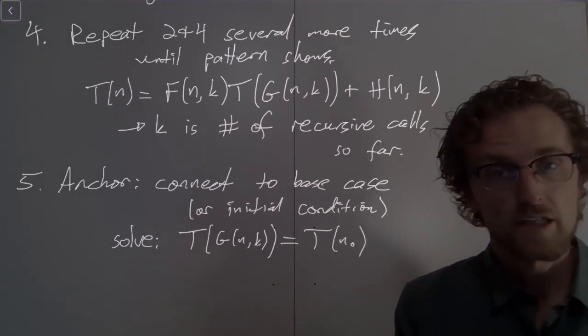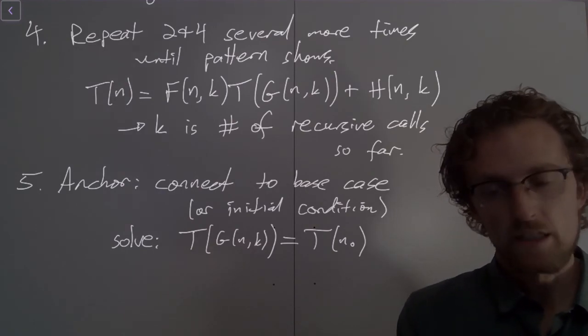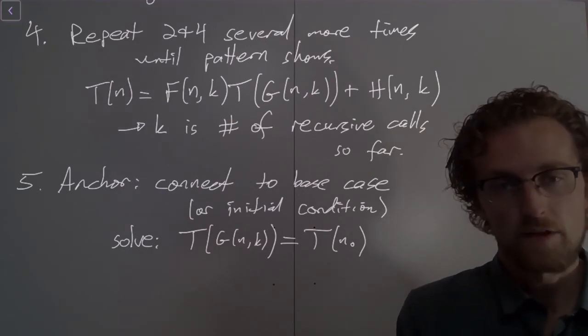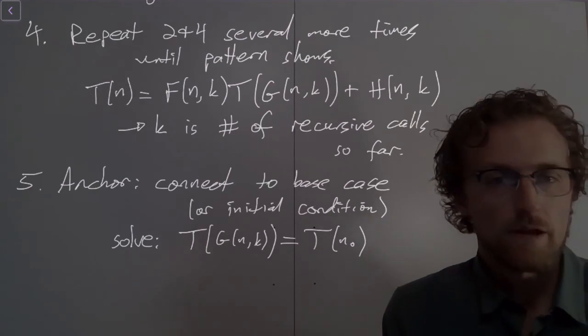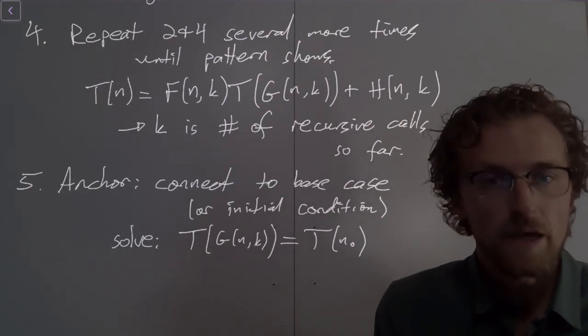Right, what is this saying? Well, T(n0) is the thing on the right side of this equals sign. That's the amount of time it takes to compute the base case.